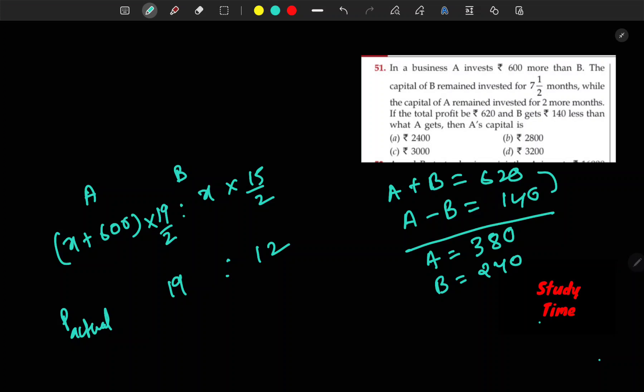So A and B value which is profit. Here is how to get it: X plus 600 upon 15X equals to 19 by 12. Here the X value is 2400.